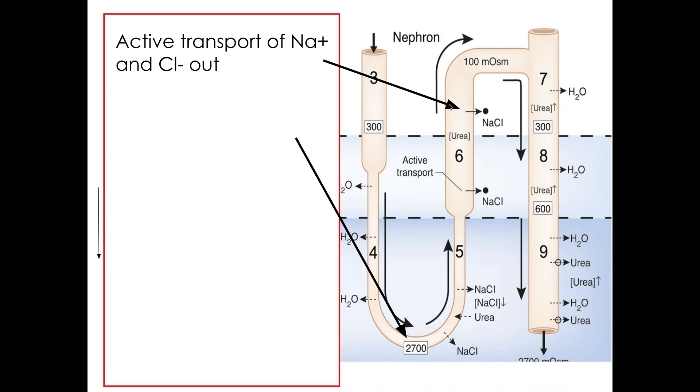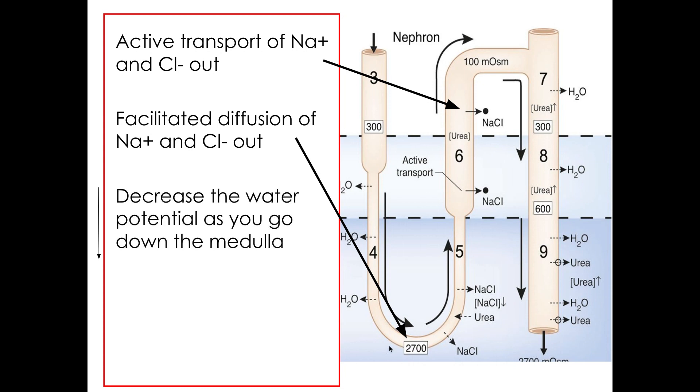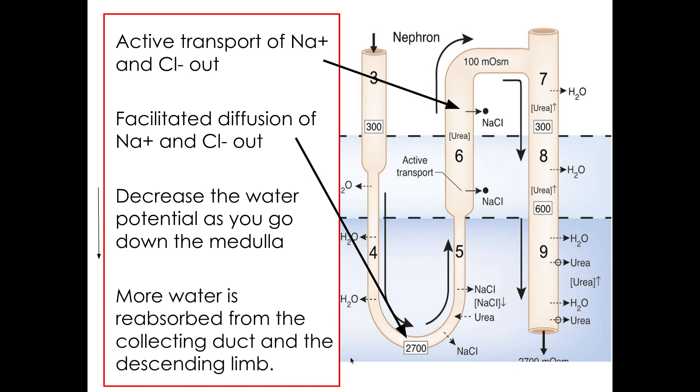And we get facilitated diffusion of Na+ and Cl- out of the bottom of the descending limb. It means that I get a decrease in the water potential as I go down the medulla. Therefore, more water is reabsorbed from the collecting duct and the descending limb back into the bloodstream.